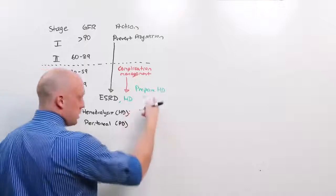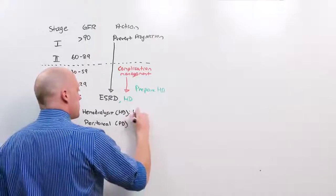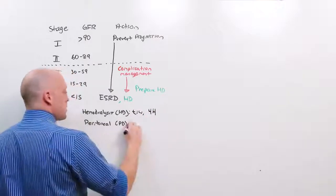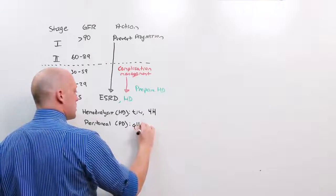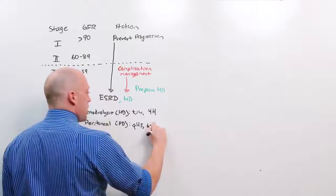Hemodialysis is the thing you need a fistula, a graft, or a VAS cath for. And that happens three times a week, generally for four hours at a time. Peritoneal dialysis happens nightly while the patient is asleep, requires a peritoneal catheter, and generally lasts six to eight hours.